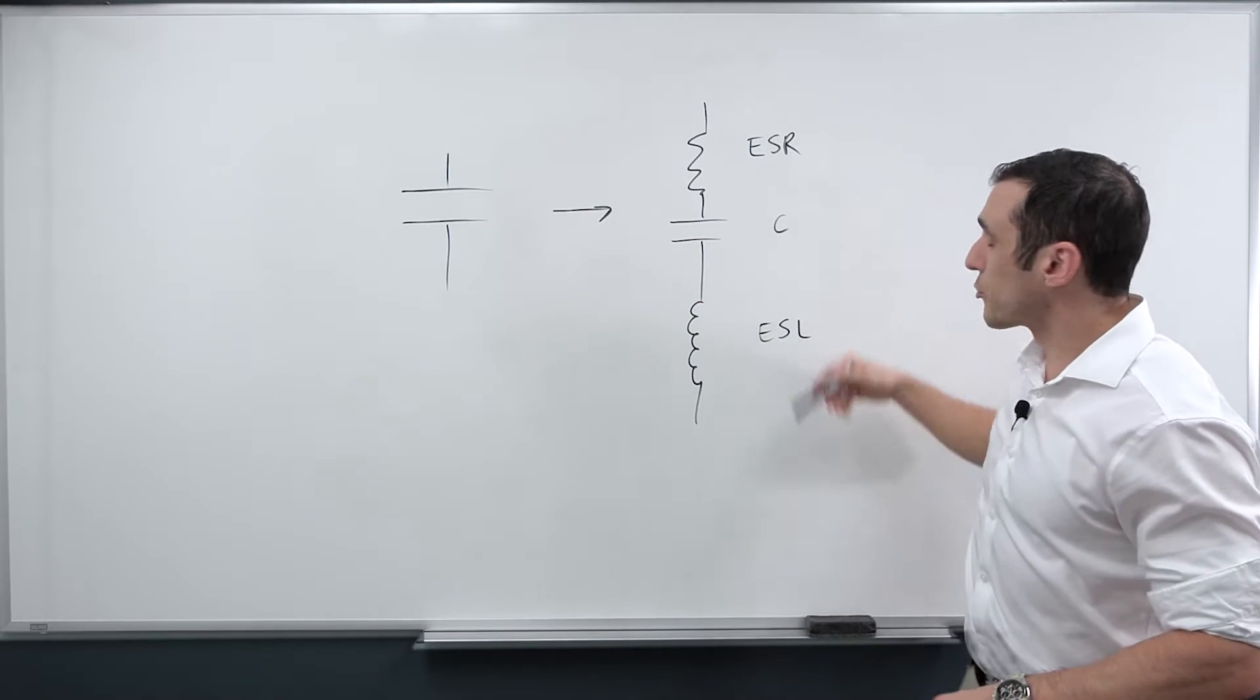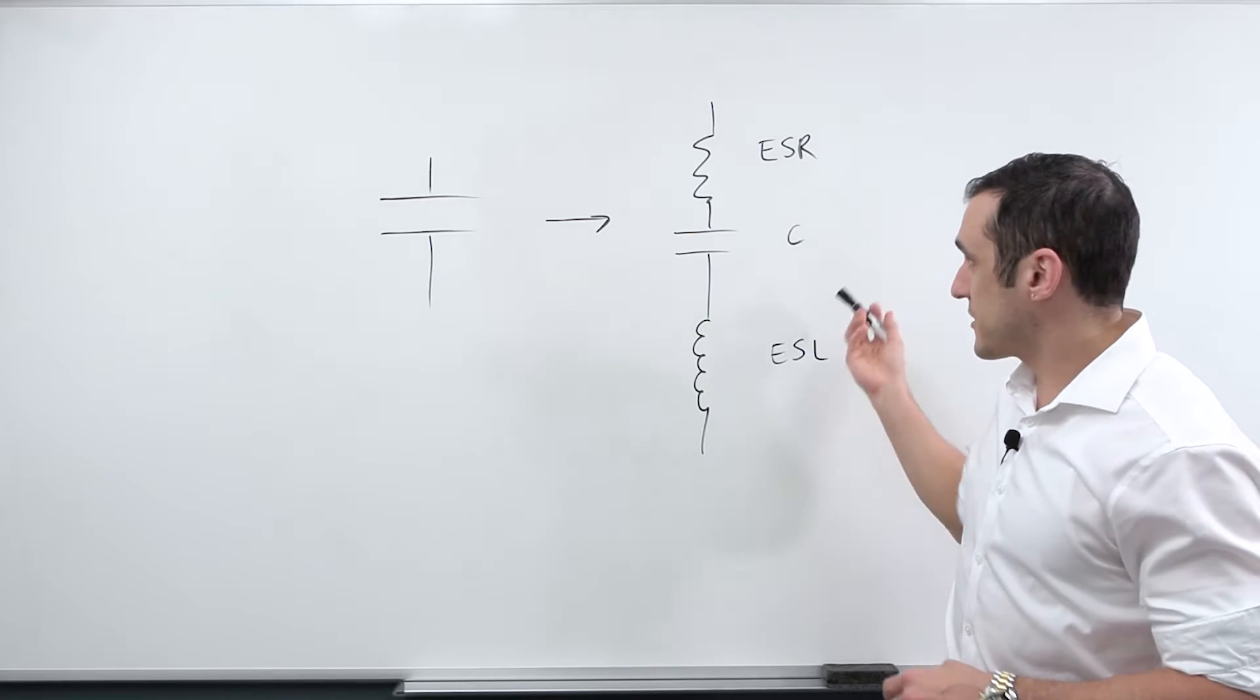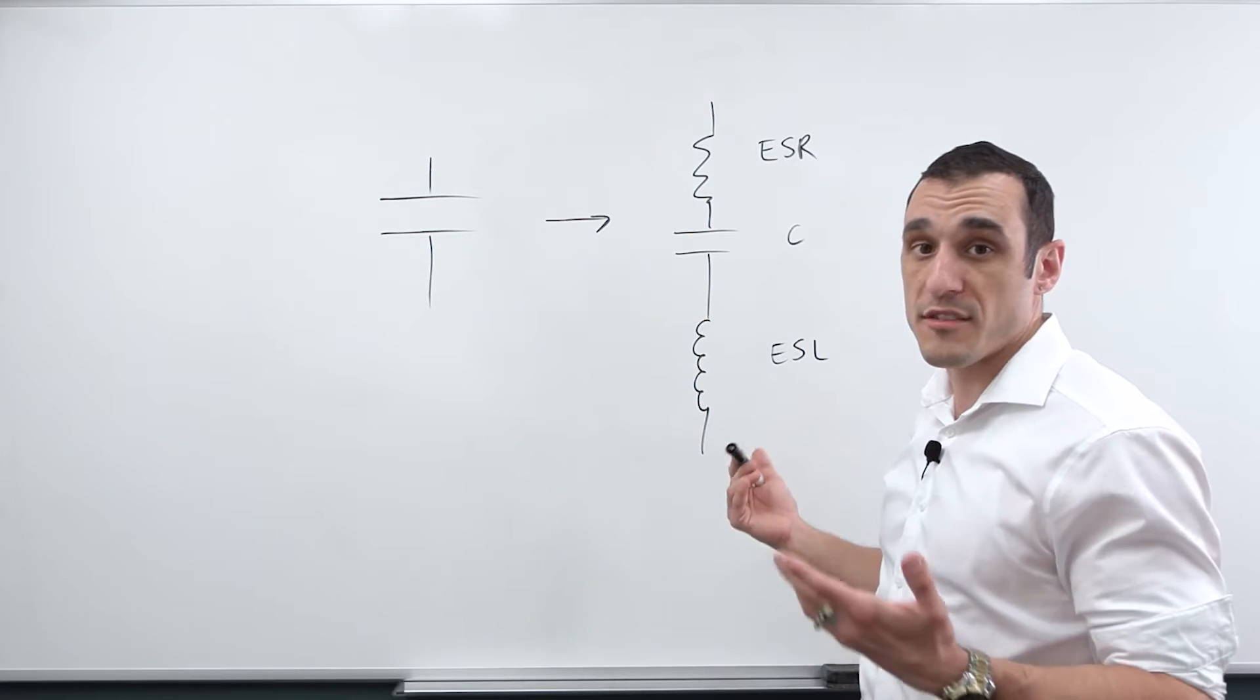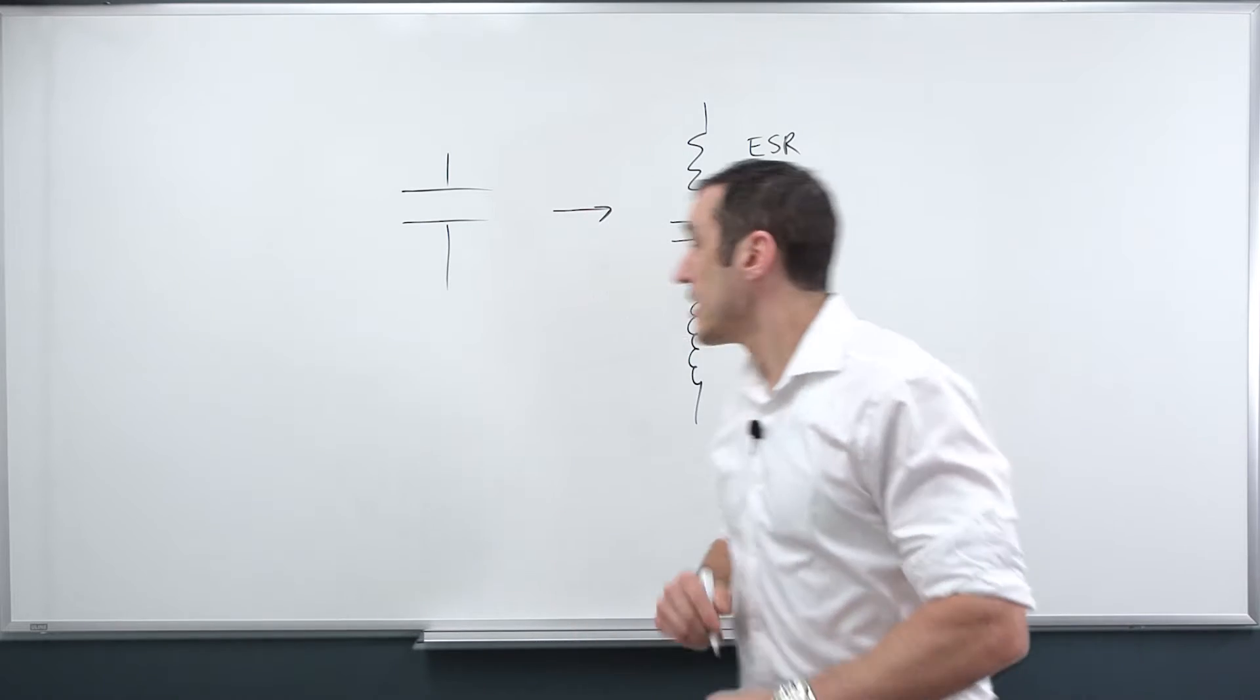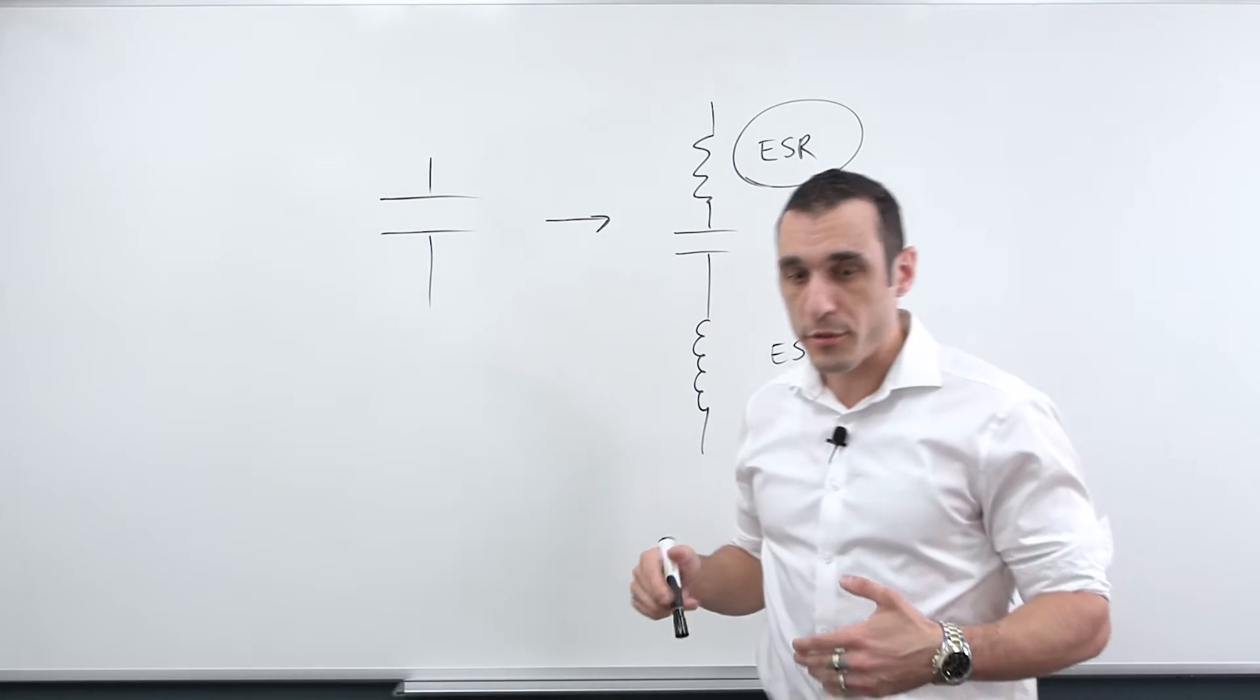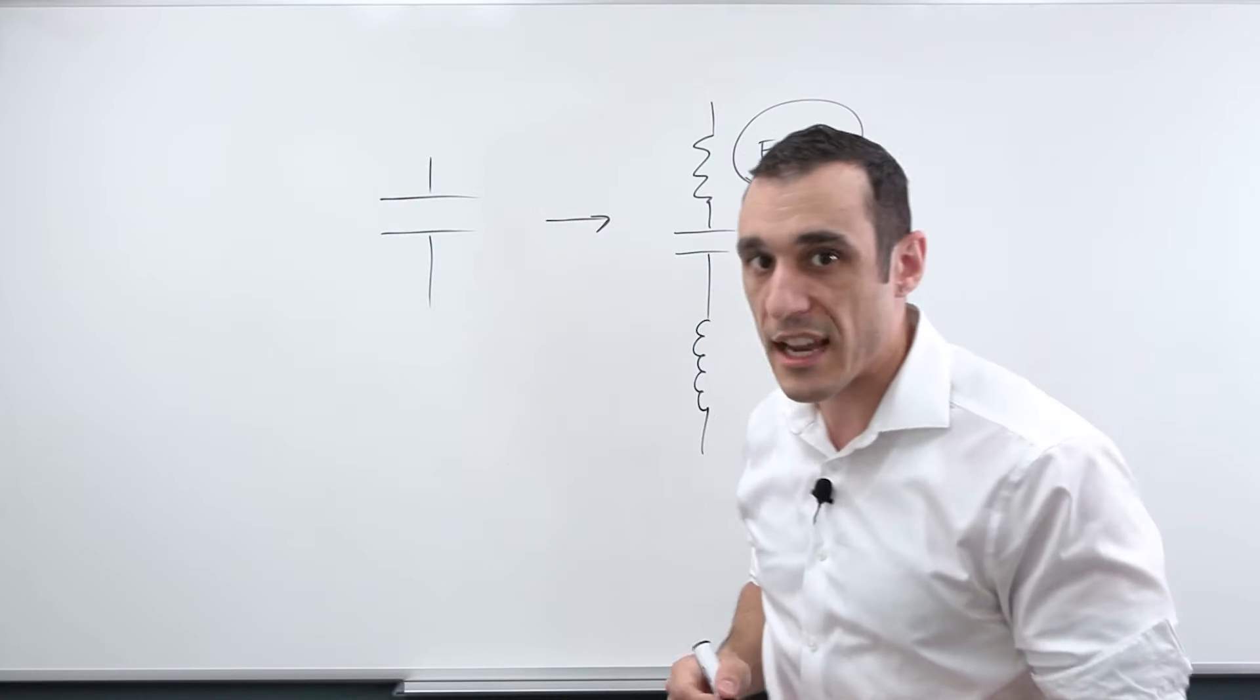And so together a real capacitor behaves like an RLC network. This means that it has a resonant frequency, it has a resonance where there will be a minimum impedance, and then above that resonant frequency inductance takes over and it behaves more like an inductor. Now with a controlled ESR capacitor, the important point here is of course the ESR value or the effective series resistance. The ESR value being controlled means that it's set within a specific range and there's a minimum value that gets specified for the ESR value in that capacitor.